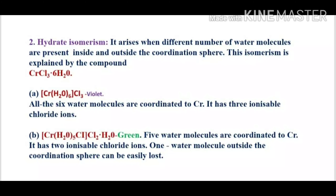The second type is hydrate isomerism, which arises when different numbers of water molecules are present inside and outside the coordination sphere. This is explained by the complex CrCl3·6H2O. In the first isomer, all six aqua ligands are inside the bracket and it is violet in color. In the second isomer, only five aqua ligands are inside the bracket and one water molecule is outside. Both have the same molecular formula but differ in the number of aqua ligands present inside the coordination sphere.